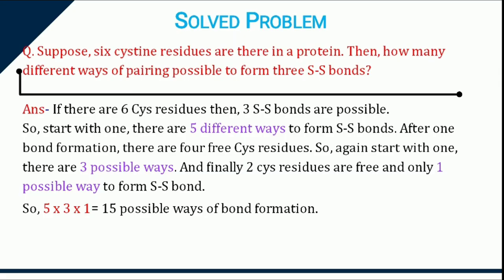And in the last part of this video, I have described a way by which you can calculate the number of possible combinations are there for disulfide bond formation. For example, a protein contains six cysteine residues. So if you start with one, there are five different choices for bond formation. After one bond is formed, there are four cysteine residues left.